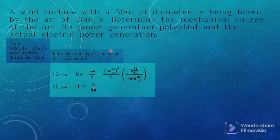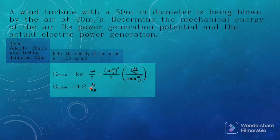Mechanical energy equals kinetic energy, where kinetic energy equals velocity squared over 2. Our velocity is 20 meters per second, so: (20)²/2 = 200 m²/s². Converting to kilojoules per kilogram using the factor 1 kJ/kg per 1000 m²/s², the mechanical energy equals 0.2 kJ/kg.